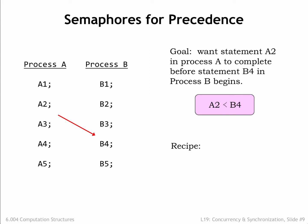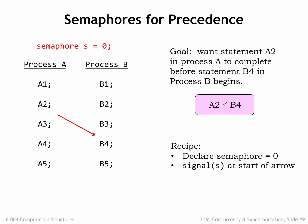Here's the recipe for implementing this sort of simple precedence constraint using semaphores. First, declare a semaphore — called S in this example — and initialize its value to 0. Place a call to signal(S) at the start of the arrow; in this example, signal(S) is placed after statement A2 in process A. Then place a call to wait(S) at the end of the arrow; in this example, wait(S) is placed before statement B4 in process B. With these modifications, process A executes as before, with the signal to semaphore S happening after statement A2 is executed. Statements B1 through B3 also execute as before, but when wait(S) is executed, process B is suspended until the signal(S) statement has finished execution. This guarantees that execution of B4 will start only after execution of A2 has completed.